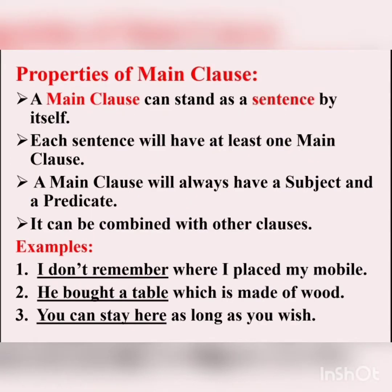Let us understand the properties of a main clause. A main clause can stand as a sentence by itself. Each sentence will have at least one main clause. A main clause will always have a subject and a predicate. It can also be combined with other clauses to make compound and complex sentences. For example: 'I don't remember where I placed my mobile.' 'He bought a table which is made of wood.' 'You can stay here as long as you wish.'